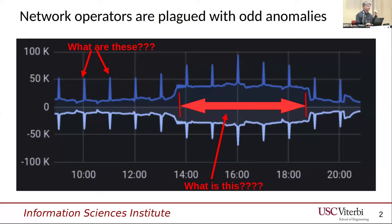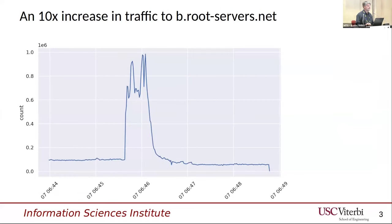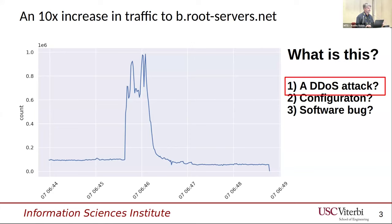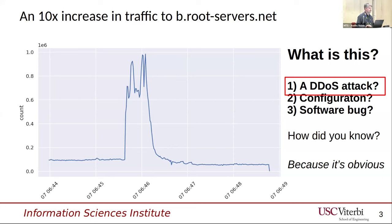For those of you that have seen similar talks like this in the past, both at DNS work and a research venue that we ran ourselves, this is different — so stay tuned. This is a tenfold increase to BeRoot back in 2018. It's from a published data set that we release for people that want to study it. You really want to know: what is this? It could be a DDoS attack, it could be a misconfiguration, it could be a software bug. Anybody can diagnose these — these are not the hard problems.